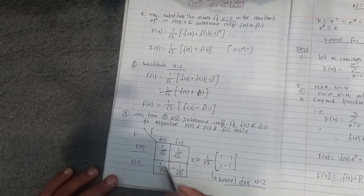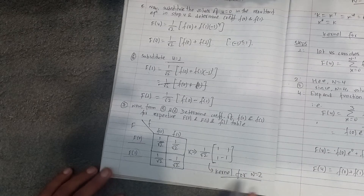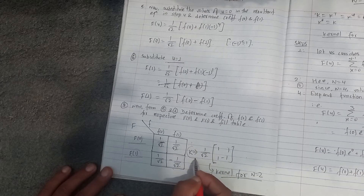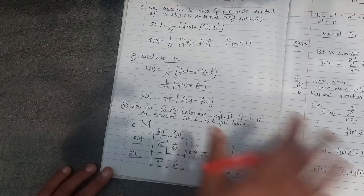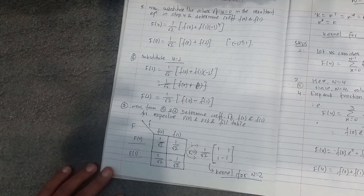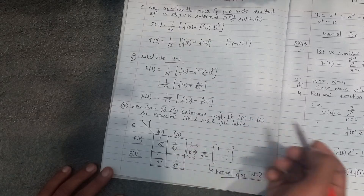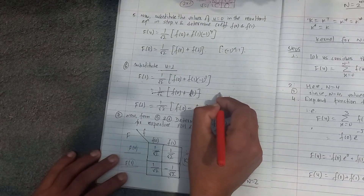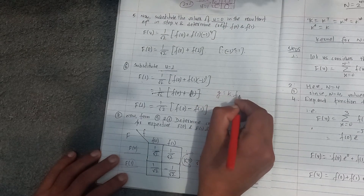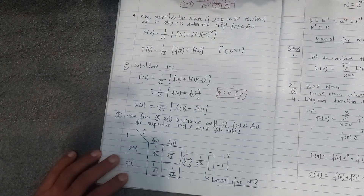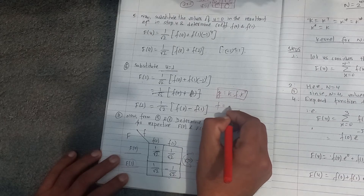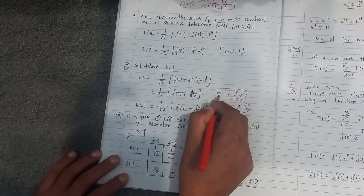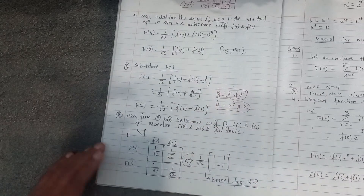This is 1 by root 2, and 1 by root 2 is common: the kernel matrix is 1 by root 2 times [[1, 1], [1, -1]]. This is the kernel. For a 2×2 image, the discrete Fourier transform output is K times the given image times K-transpose. We need to do this for the 2-dimensional image.